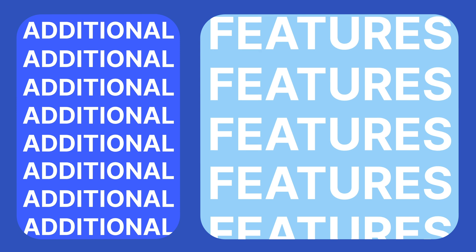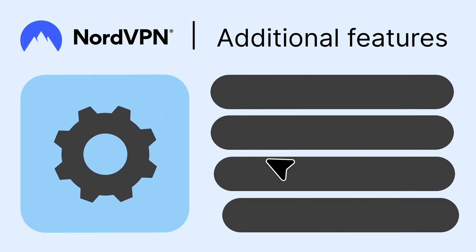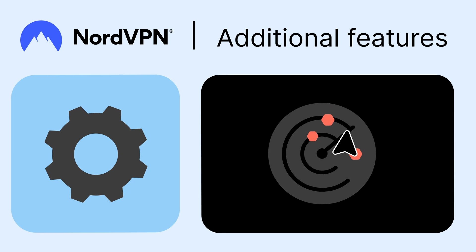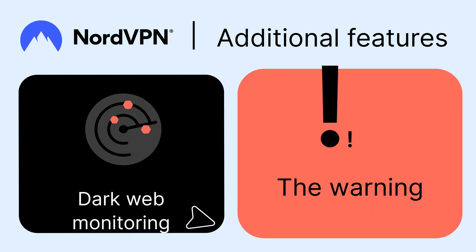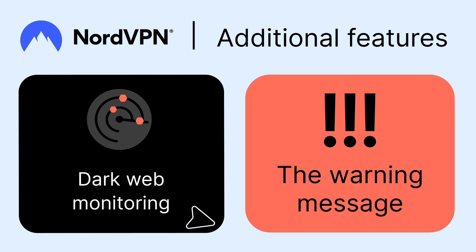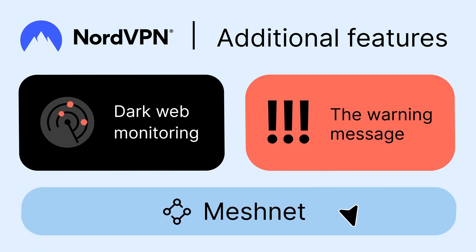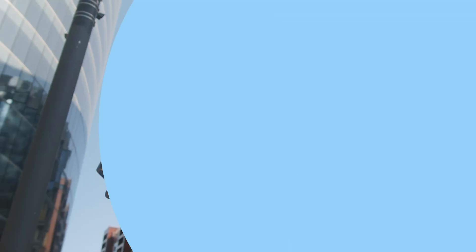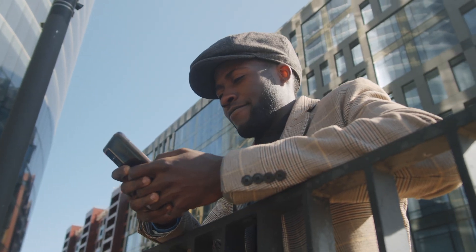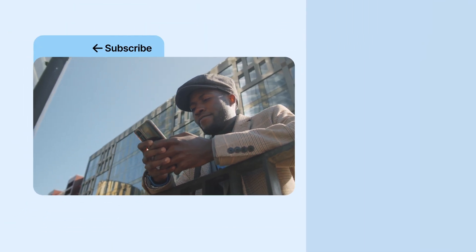There are also additional features to level up your privacy. Tap the gear icon to go to Settings and switch on the Dark Web Monitoring feature — NordVPN will scan the web and warn you if your account's credentials show up in a leaked database. You can also access your various devices remotely using MeshNet. Make the most out of this feature by checking out our guides. Now you can use the NordVPN app like a cybersecurity pro. Stay safe out there.